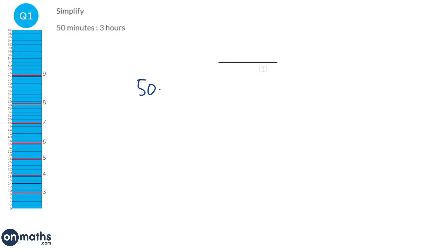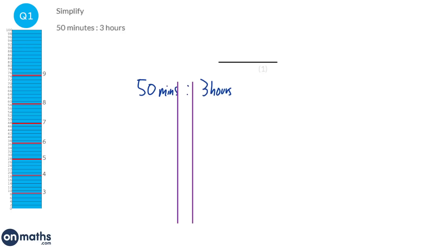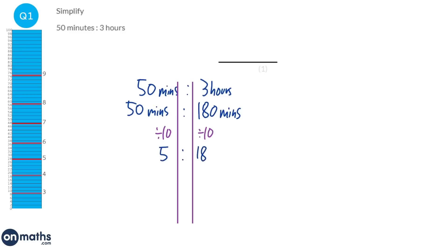We're going to first of all have to convert these both into the same unit. We've got minutes and hours, so I'm going to pick the smaller unit which will be minutes. I'm going to keep that 50 minutes and convert three hours into minutes, which would be 180 because we times by 60. Dividing by 10 gives us 5 to 18, and there's nothing further we can simplify, so the ratio would be 5 to 18.